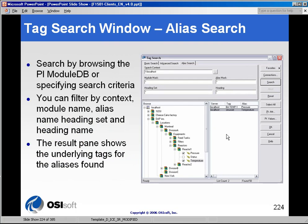Here's an example screenshot of someone who has built out a module database and who has pressure, status, and temperature aliases associated with Reactor 1. Eventually the users are told what the tag names are, but when they drill down for the information, they are looking at the common name aliases in the module database. You can build out your data link reports or your ProcessBook displays all using this module database to gain context or gain an easier way for users to find data.